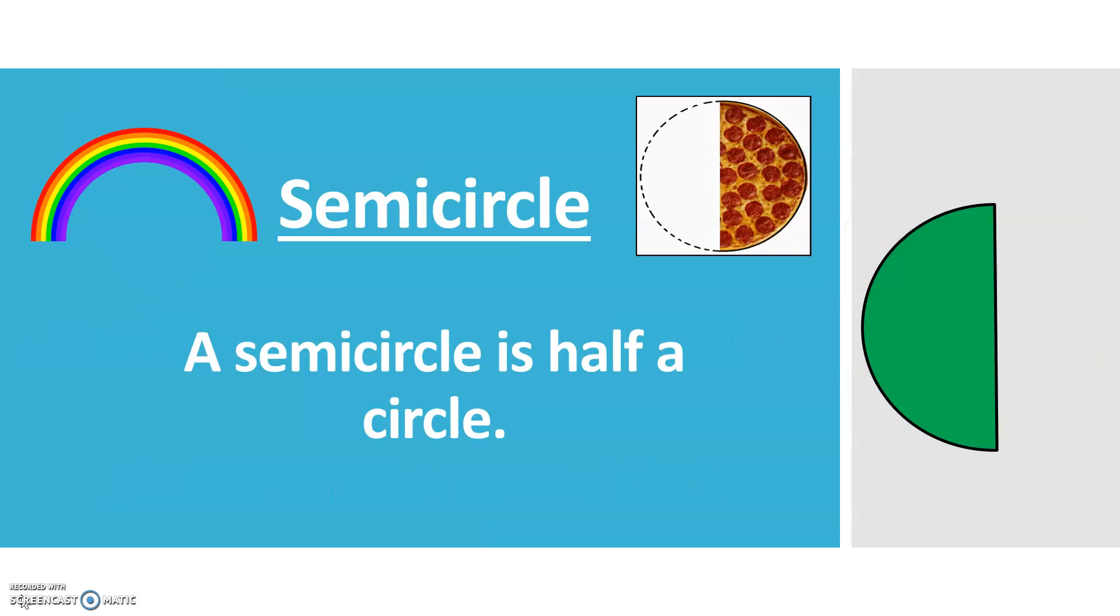A semicircle. A semicircle is half a circle. So think of half a pizza or a rainbow. These are examples of semicircles.